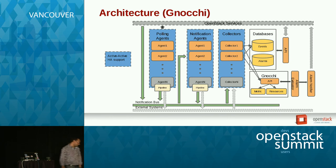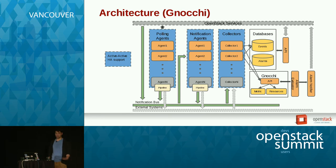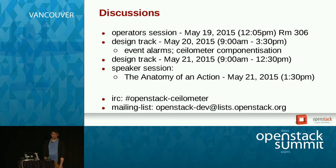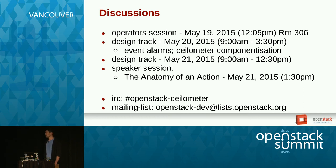This is how Gnocchi fits in: your alarm evaluator will now query the Gnocchi API, which should significantly speed up statistics queries because the data is already pre-aggregated. Tomorrow we actually have an operators discussion or ops session where a lot more developers will be there and we can chat about what needs to be fixed.